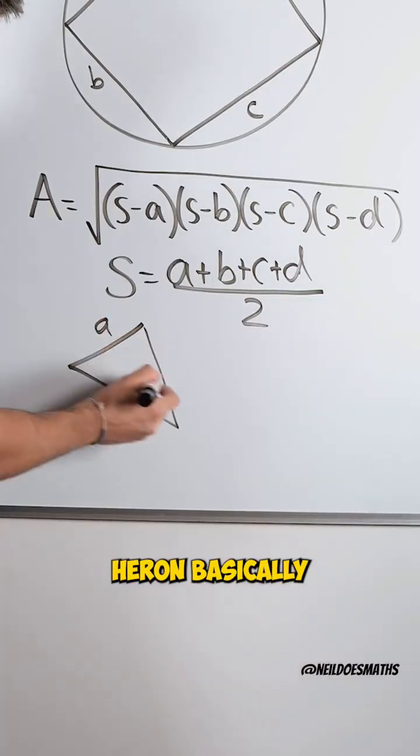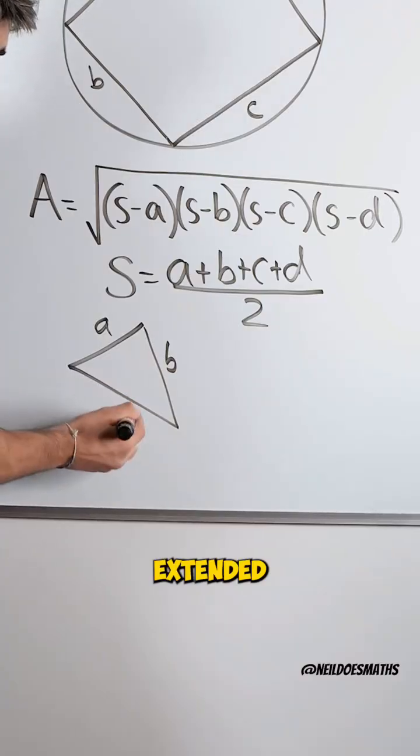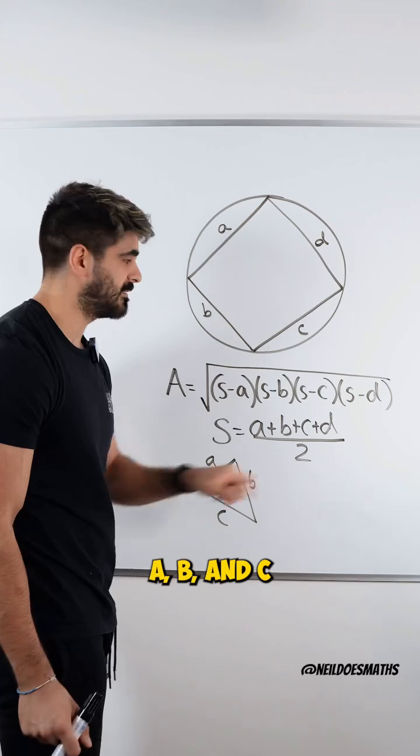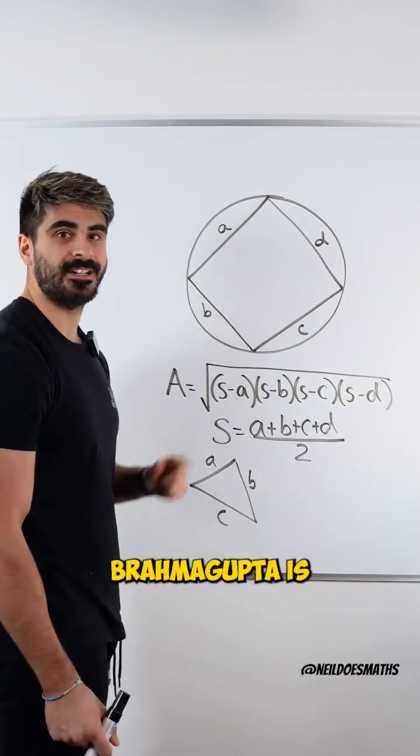Heron basically extended Brahmagupta's formula for finding areas of triangles a, b, and c. d is just zero. Brahmagupta is the OG.